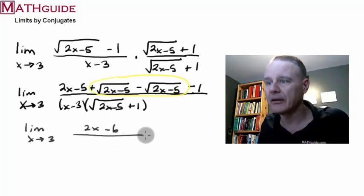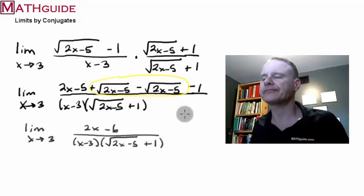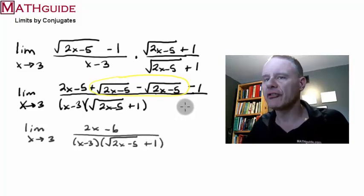And the denominator is not changing. So over here I get square root 2x minus 5 plus 1. Good so far.